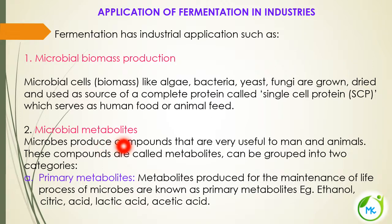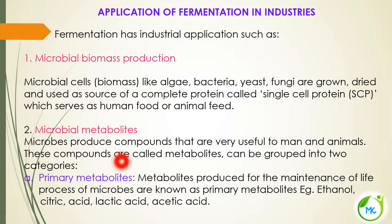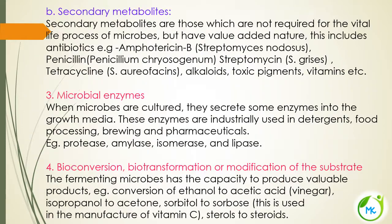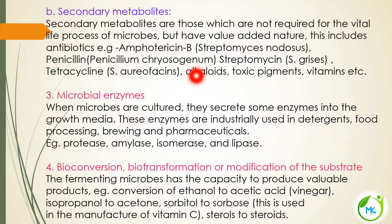Number two is microbial metabolites. Microbes produce certain compounds that are useful to humans and animals, called metabolites, grouped into two categories. Primary metabolites are produced by the microorganism for its own maintenance of life processes — examples include ethanol, citric acid, lactic acid and acetic acid. Secondary metabolites are not required for the microorganism's own life processes but have added value — for example, certain microorganisms produce antibiotics as secondary metabolites used for treatment of diseases. Certain alkaloids and vitamins are also extracted from microorganisms as secondary metabolites.